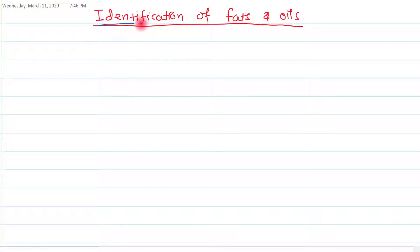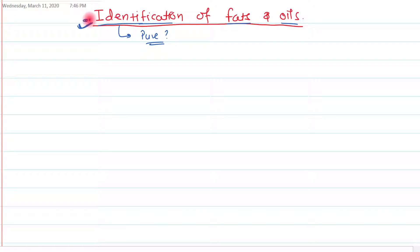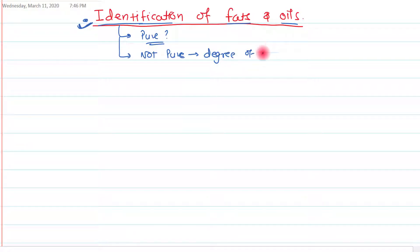In this video tutorial, I am going to discuss the identification of fats and oils. When we want to identify whether a particular fat is pure or not, we need to employ different techniques. If we perceive that a particular fat is not pure and we want to identify how much adulteration is there, we want to identify the degree of adulteration in a particular lipid — we can employ various methods of identification of fats and oils.